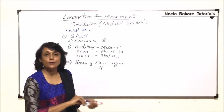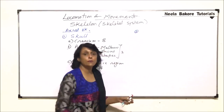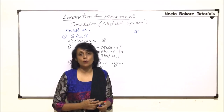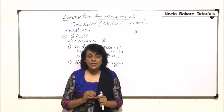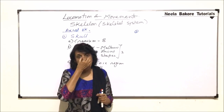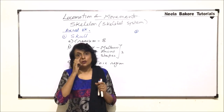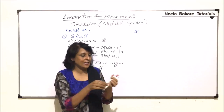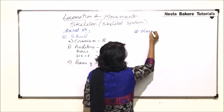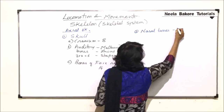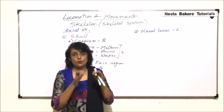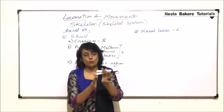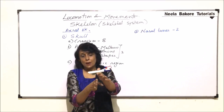The first bones we are talking about are the nasal bones, also known as nasals. The nose has a hard part called the nose bridge, and this part is made up of two bones placed at an angle — these are the nasal bones. They are two in number, one on each side — a paired structure.